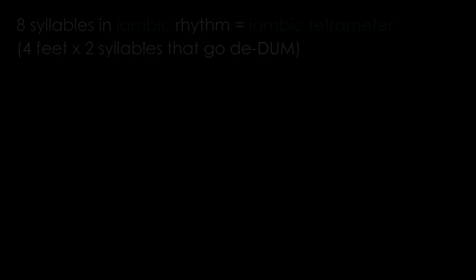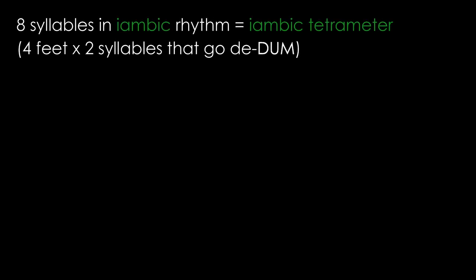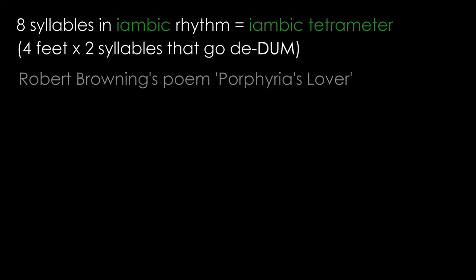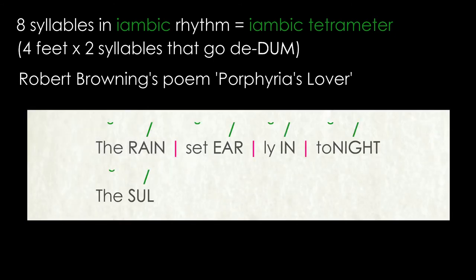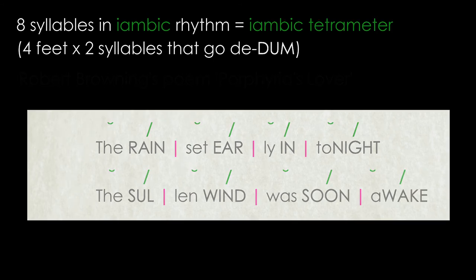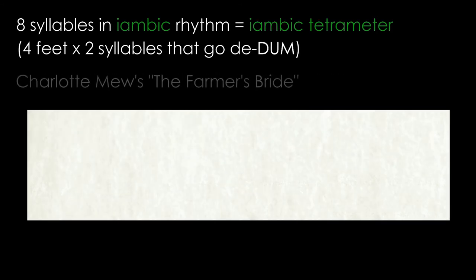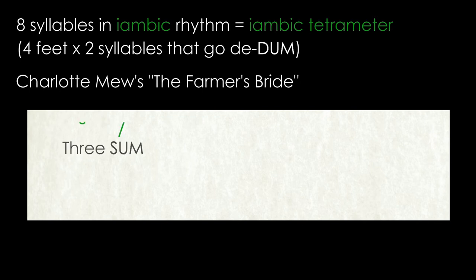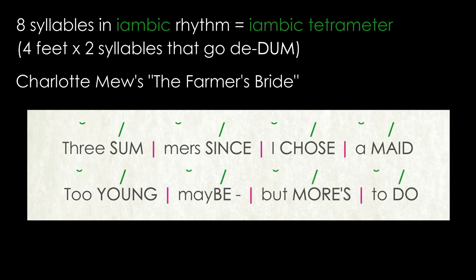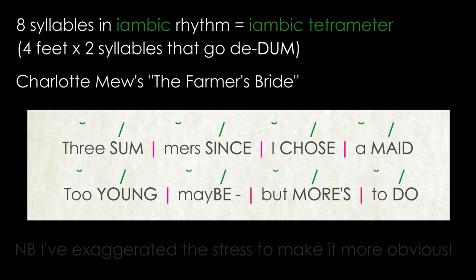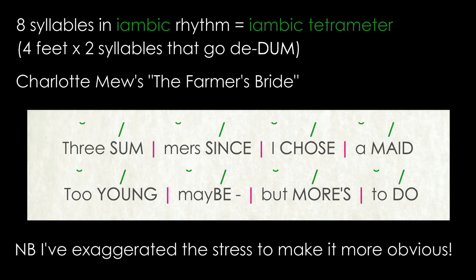A line of eight syllables written in iambic rhythm is called iambic tetrameter. There are four feet of two syllables each which go da-dum. Porphyria's Lover by Robert Browning uses a base metre of iambic tetrameter: 'The rain set early in to-night, the sullen wind was soon awake.' As does The Farmer's Bride by Charlotte Mew: 'Three summers since I chose a maid, too young maybe, but more's to do.' Note that the stress has been exaggerated; you would actually read it with a more natural intonation.